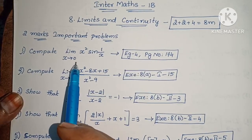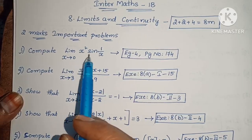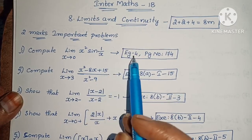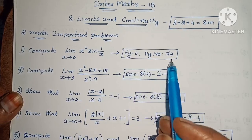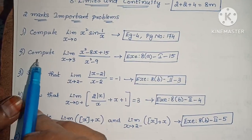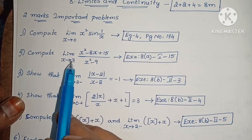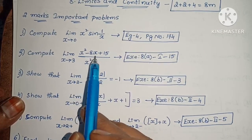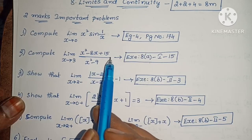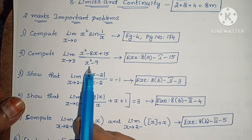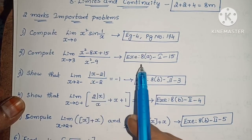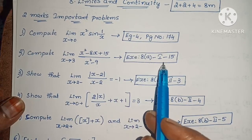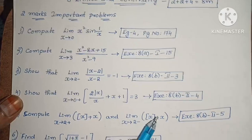First one: Compute limit extends to 0 of x squared into sin of 1 by x. Example 4, page number 174. Next: Compute limit extends to 3 of x squared minus 8x plus 15 divided by x squared minus 9. Exercise 8, first roman law, 15th one.